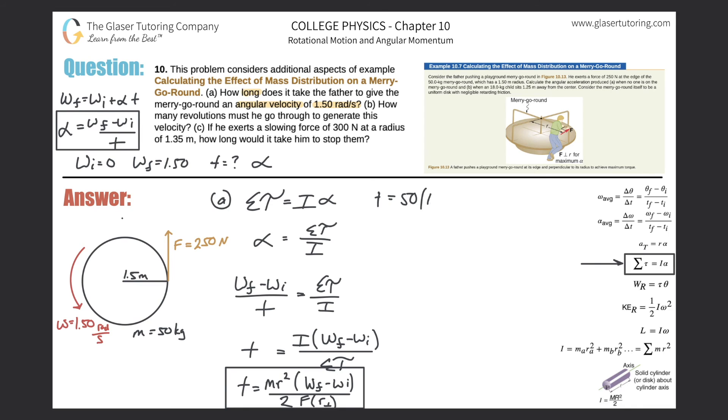Actually, you can also simplify this right now. If I look, the radius up here is the same as the perpendicular lever arm, so this radius will cancel with one of those. So I'll use that simplified formula. So the one radius now at the top, 1.5, multiplied by the final angular velocity, which they told us was 1.50 radians per second minus the initial, which we assume to be zero, divided then by two times the applied force, and the force that the dad is applying is 250 newtons.